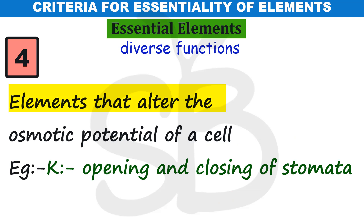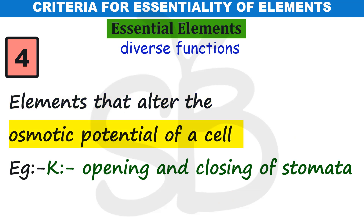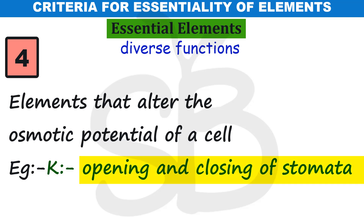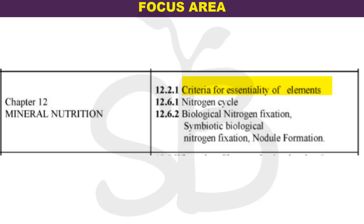Fourth, essential elements alter the osmotic potential of a cell. For example, potassium (symbol K) helps in the opening and closing of stomata by altering osmotic potential. This completes the topic of criteria for essentiality of elements, including the memory tricks and mnemonics.